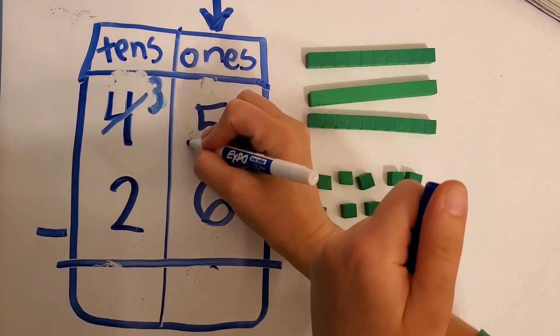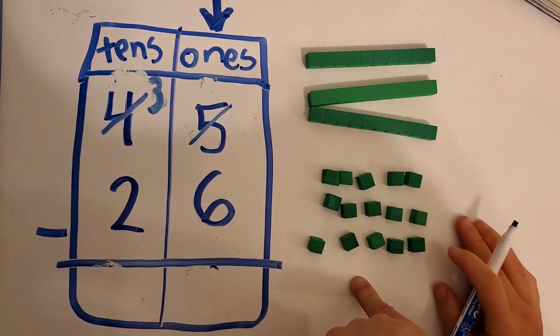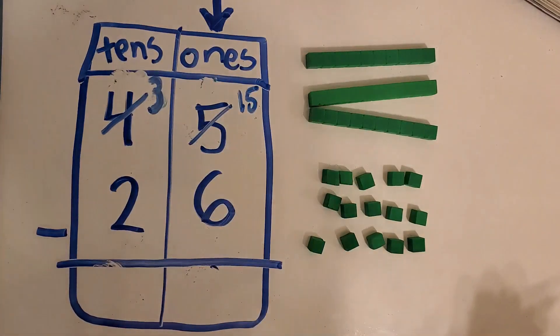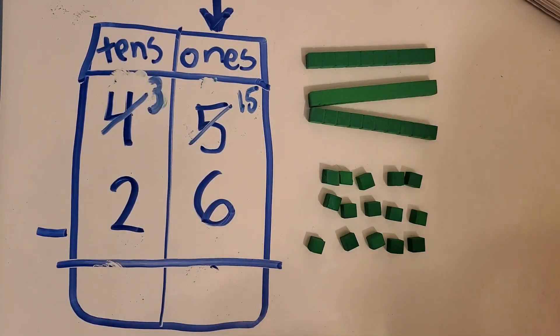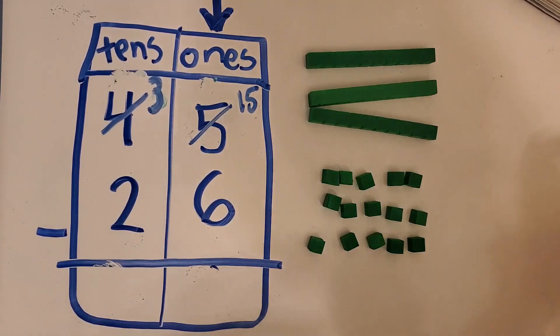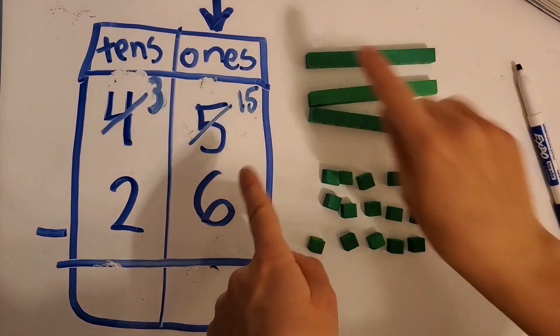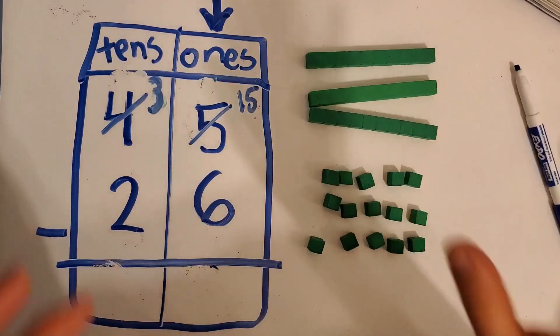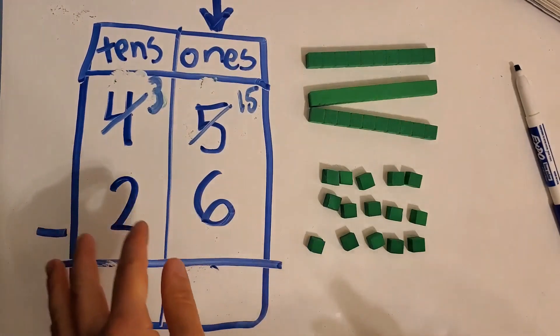And now we regrouped our five ones, and we regrouped, and now we have fifteen. So now it is fifteen minus six. Fifteen. We're in the ones. Fifteen minus six. We can subtract now. We regrouped. We're all good on that. Now we have to subtract.